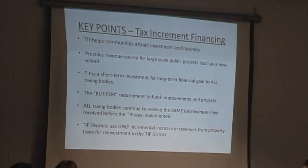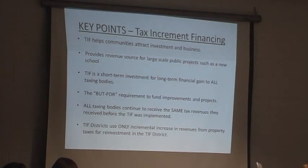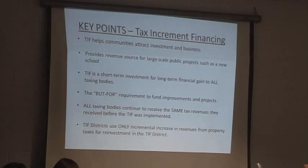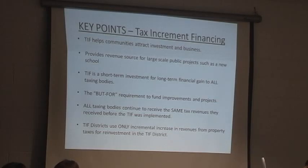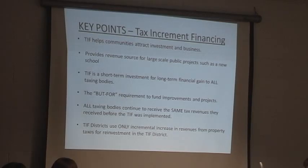Some key points — these are things that both Joe and I have mentioned already. TIF helps communities attract investment and business. It provides a revenue source for large-scale public projects — in this case, we're talking about a new school as an opportunity. It is a short-term investment for long-term financial gain to all taxing bodies. The but-for argument is a requirement to fund improvements in projects. All taxing bodies continue to receive the same tax revenues they received before the TIF was implemented, and TIF districts only use incremental increases in revenues from property taxes for reinvestment in the district.